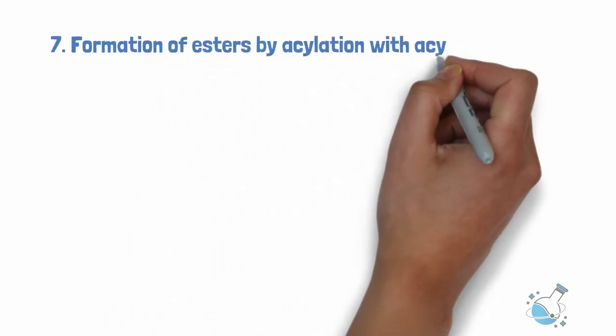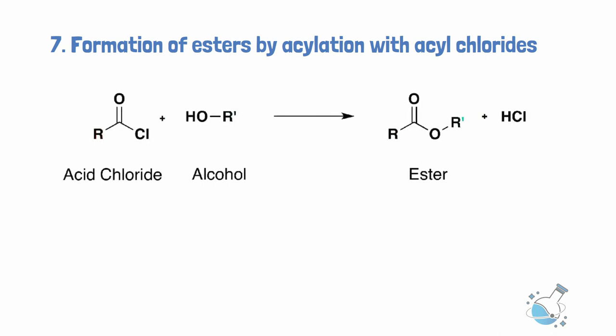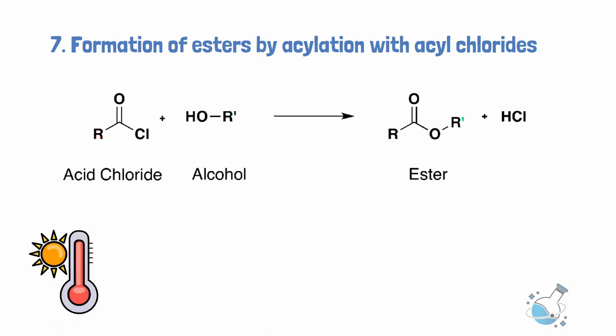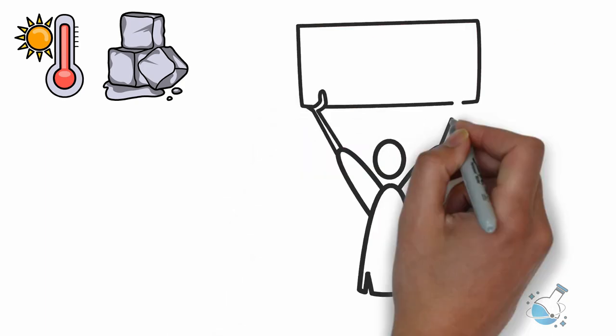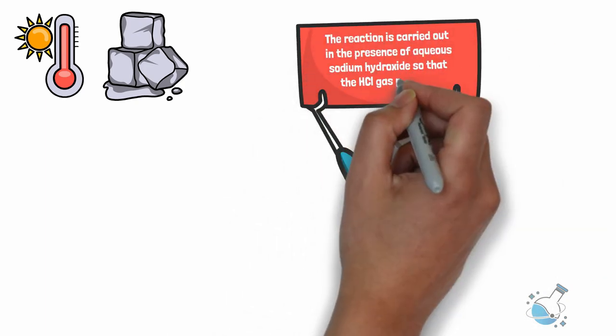Number 7. Formation of esters by acylation with acyl chlorides. Ethanoyl chloride readily reacts with ethanol to form ethyl ethanoate, the desired ester. This reaction evolves a lot of heat and that is why the alcohol needs to be kept in a cold condition. The reaction is carried out in the presence of aqueous sodium hydroxide so that the hydrogen chloride gas produced can be neutralized.